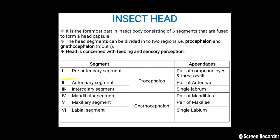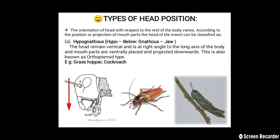The orientation of the head with respect to the rest of the body varies according to the position or projection of the mouth parts. The head can be classified into three types. First is hypognathous — 'hypo' means below and 'gnathus' means jaw. The head remains vertical and at right angles to the long axis of the body, with mouth parts ventrally placed and projected downwards. This is also known as the orthopteroid type; for example, grasshopper and cockroach.